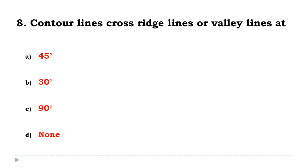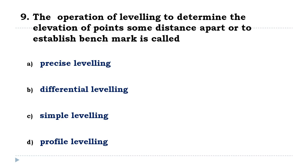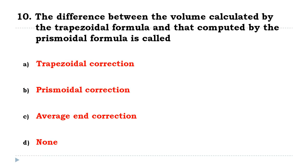The operation of leveling to determine the elevation of points some distance apart or to establish a benchmark is called differential leveling. The difference between the volume calculated by the trapezoidal formula and that computed by the prismoidal formula is called the prismoidal correction.